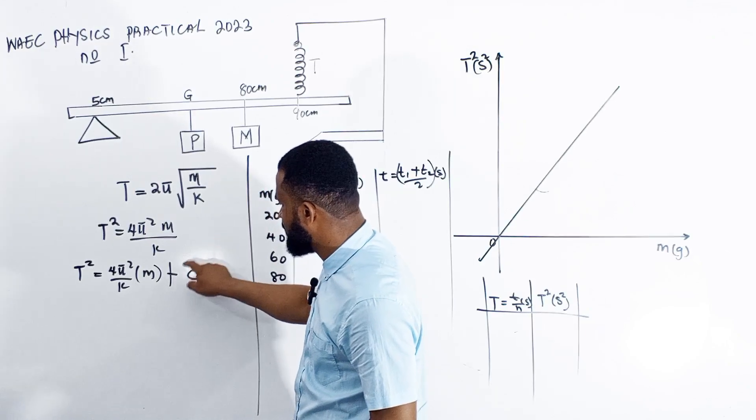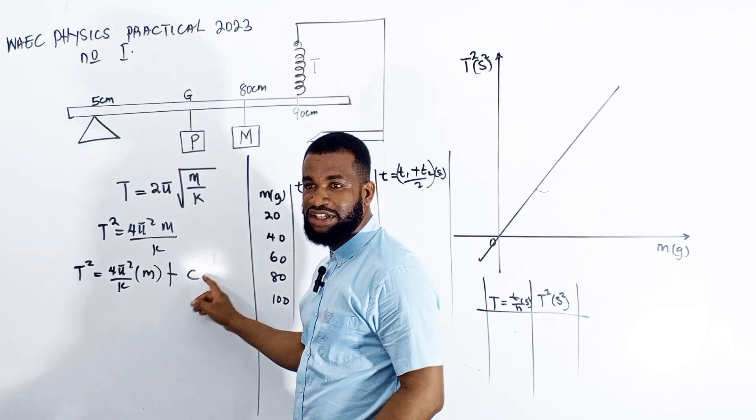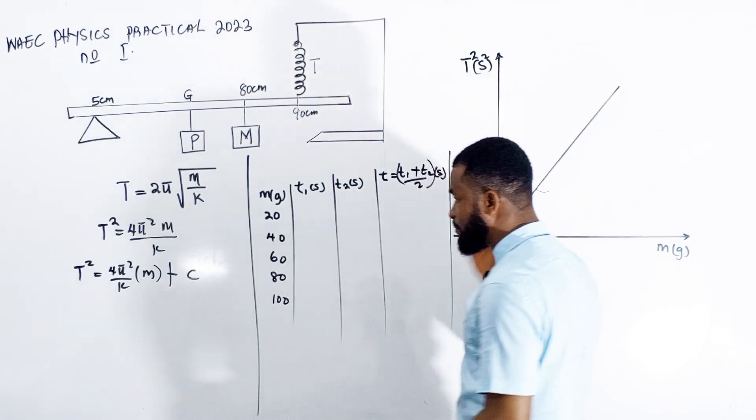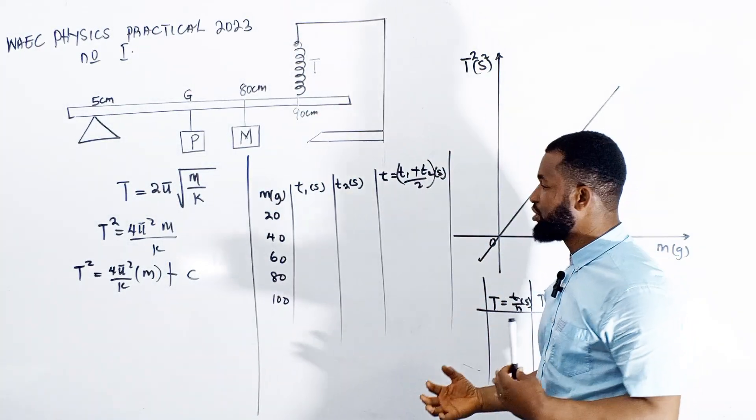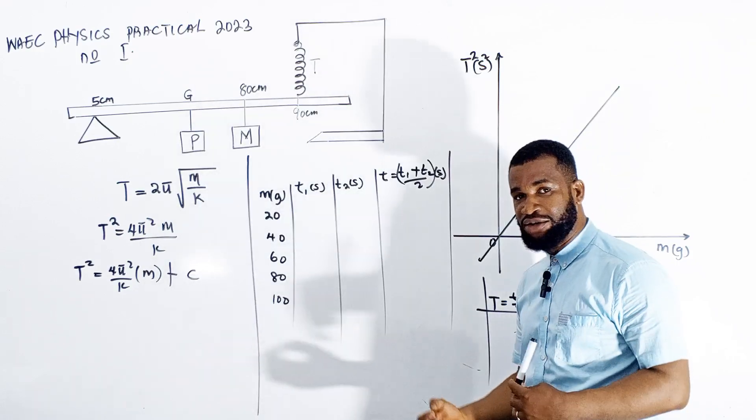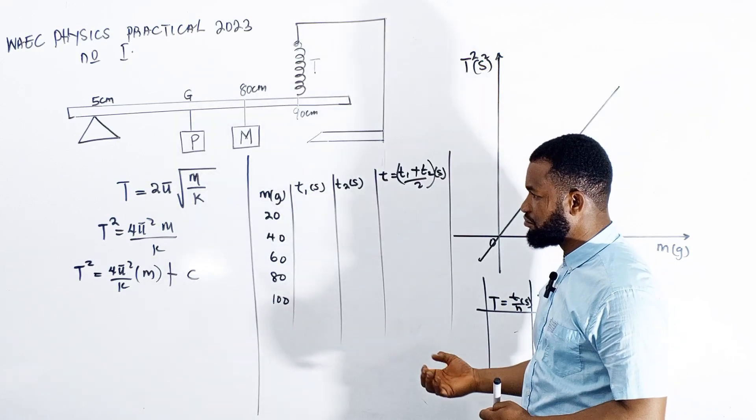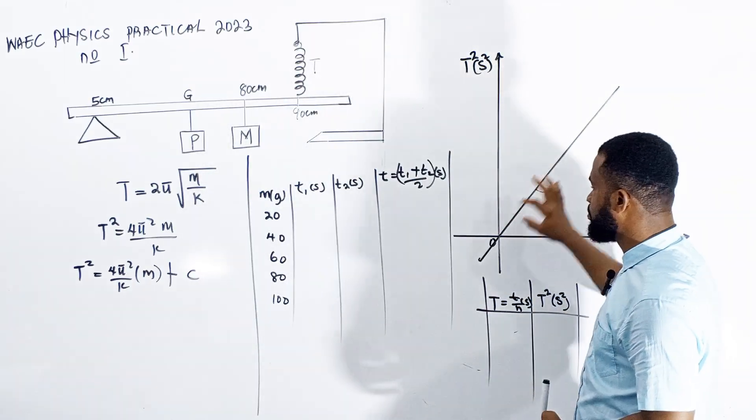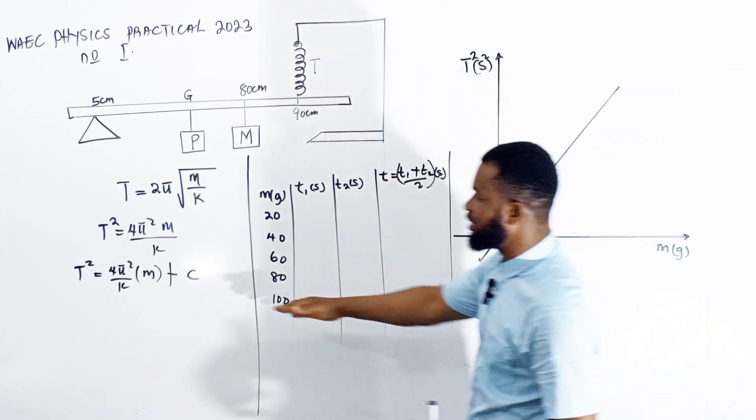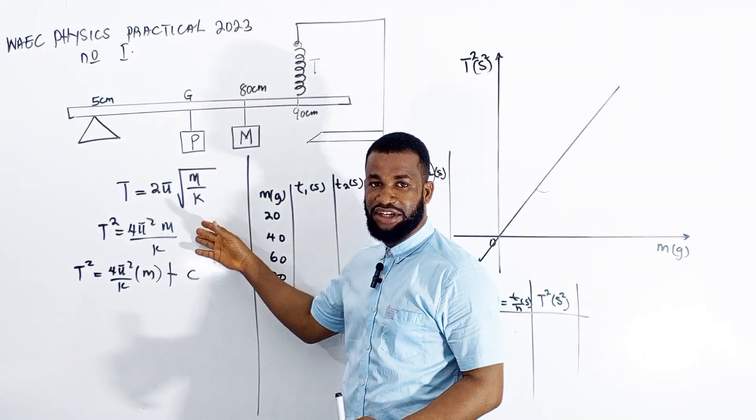This is the equation you'll be dealing with. You'll realize that C has no value, meaning our graph is expected to pass through the origin. It may not necessarily pass through the origin due to mistakes or irregularities during your experiment.